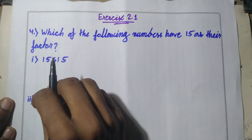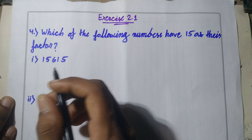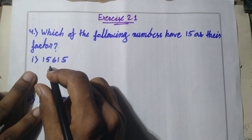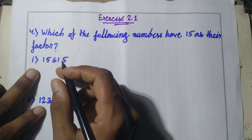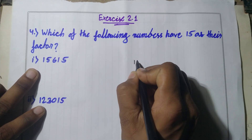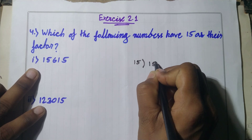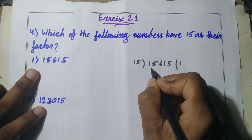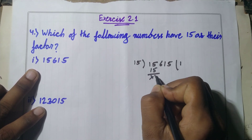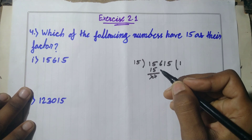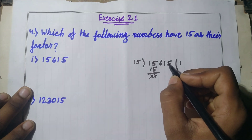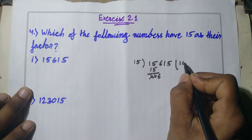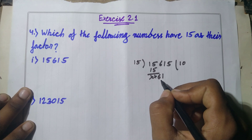Exact divisible means the remainder is zero. Let's solve this question. The first number is 15,615. We divide 15,615 by 15. One time 15 goes in, and we bring down the next digit — 61 comes in this place, then two digits come down.